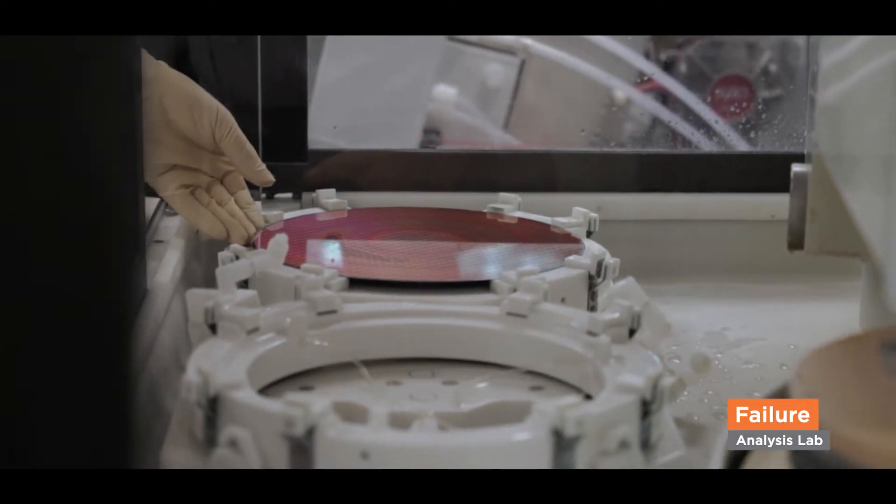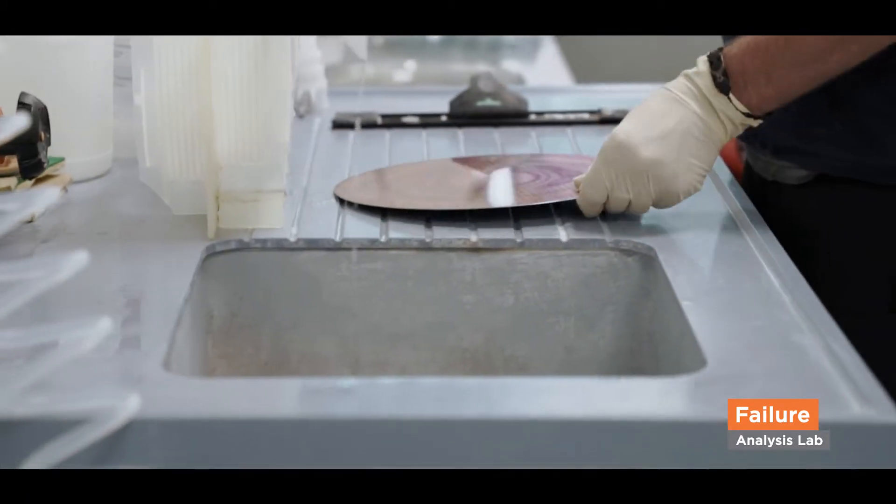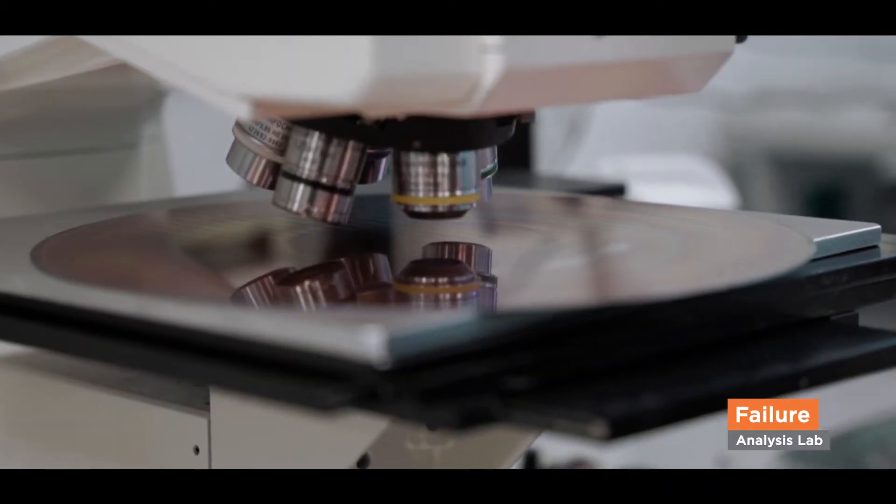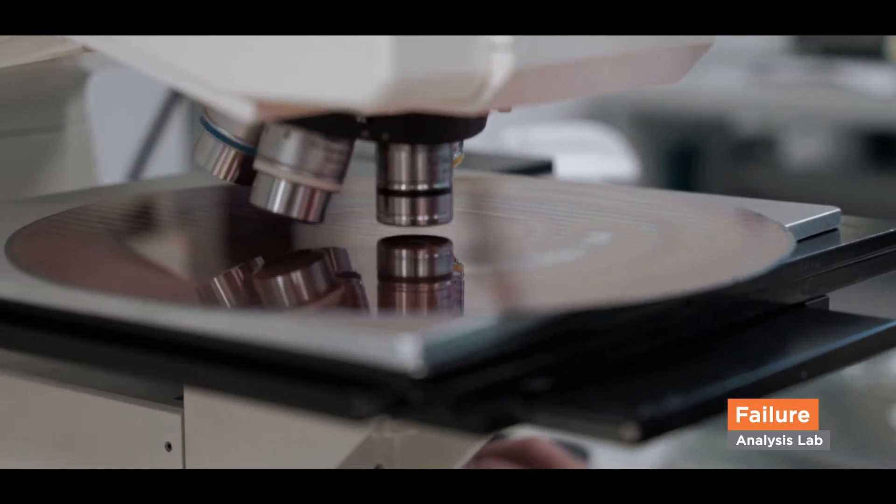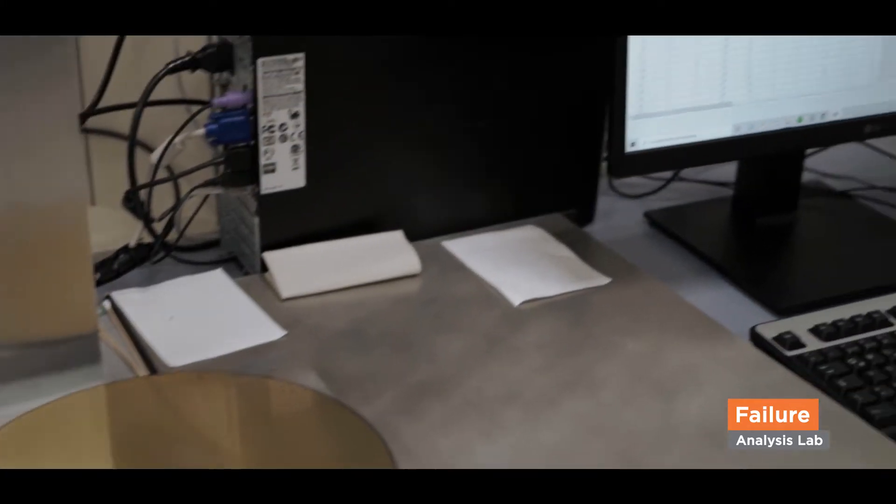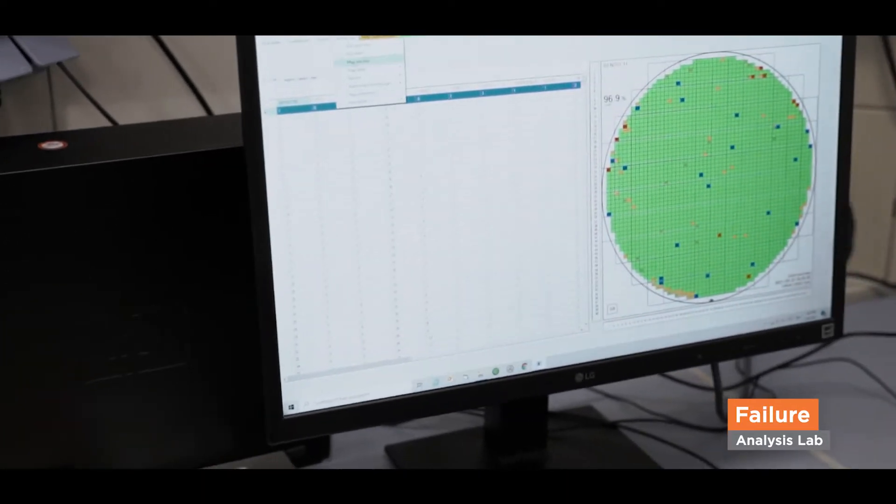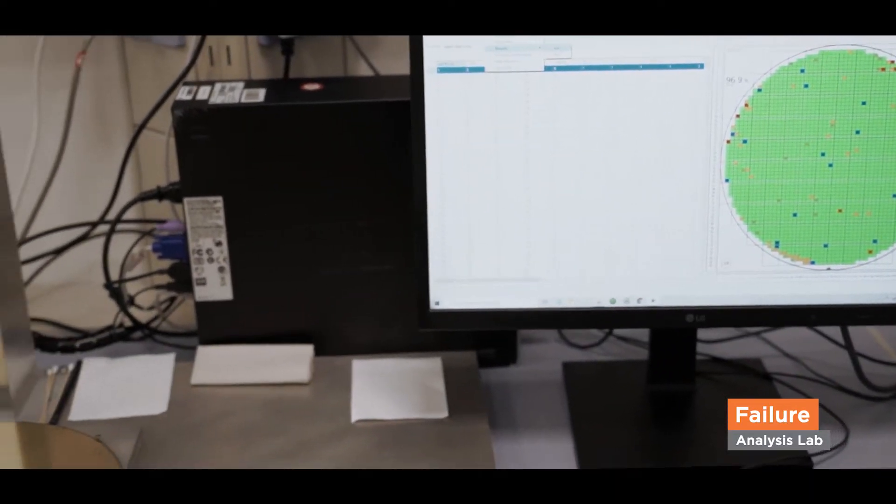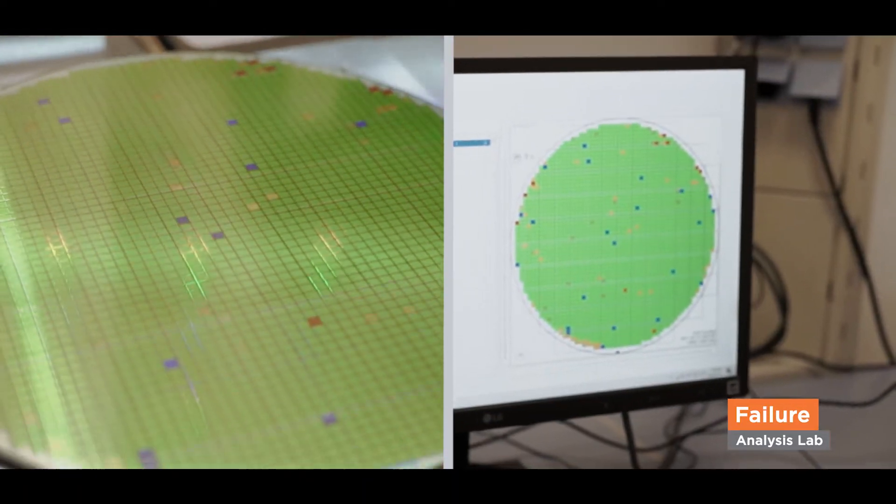We use wet and plasma chemical processes to remove layers, but also a full wafer polisher for controlled thinning of the wafer. Another self-invented and useful tool is the wafer beamer. It is used to project defect or yield wafer maps directly onto the wafer to mark dies or areas more easily.